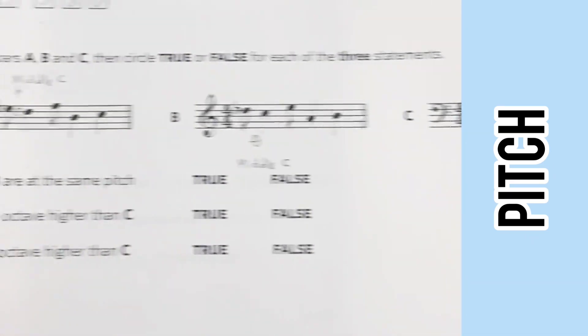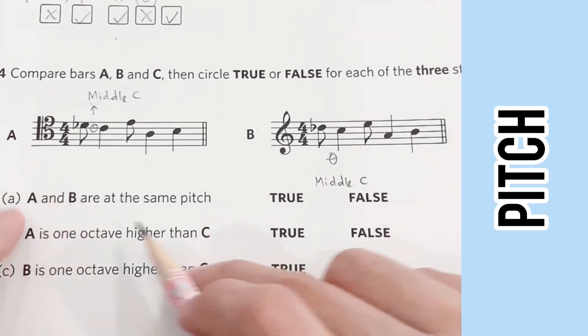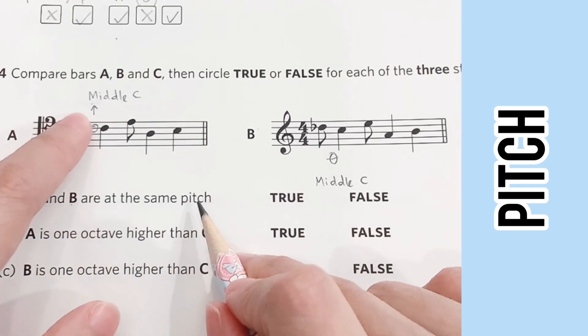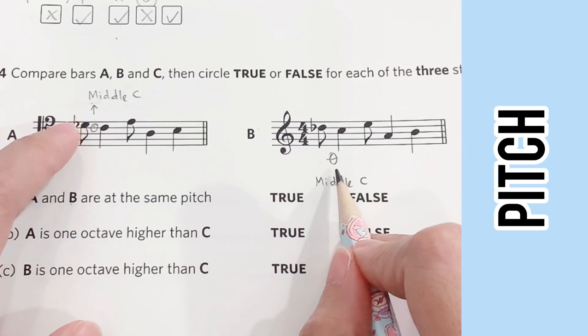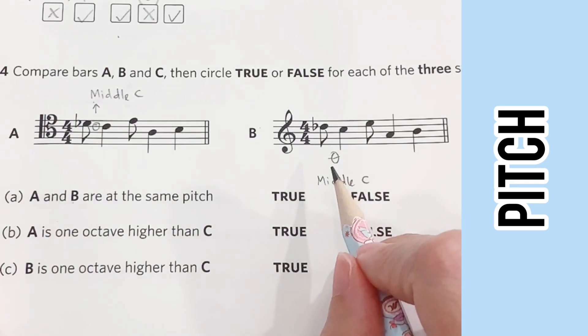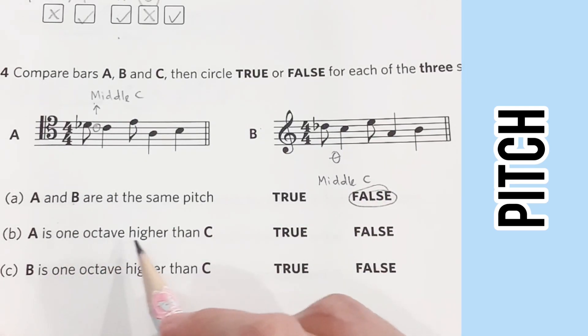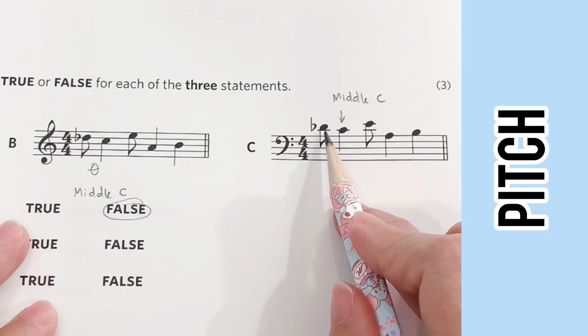Now we proceed to the statements. The first one says that A and B are the same pitch. They are not the same pitch because the notes in bar B are generally about an octave higher than middle C. A is one octave higher than C here, a second higher than middle C, therefore they are the same pitch—so it's a false statement.